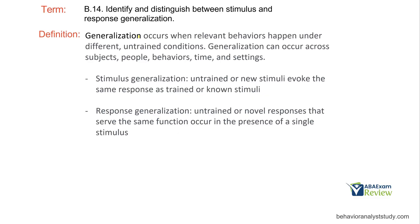Generalization occurs when relevant behaviors happen under different untrained conditions. With stimulus and response generalization, we look at both the behaviors and those conditions, because generalization can occur across learners, different people, behaviors, time, and settings. Anytime we teach something and it goes out into the natural world, or the thing taught changes slightly, we're looking at generalization. Generalization may be the most important thing we focus on when working with learners — if your client is not generalizing, you're not being effective.